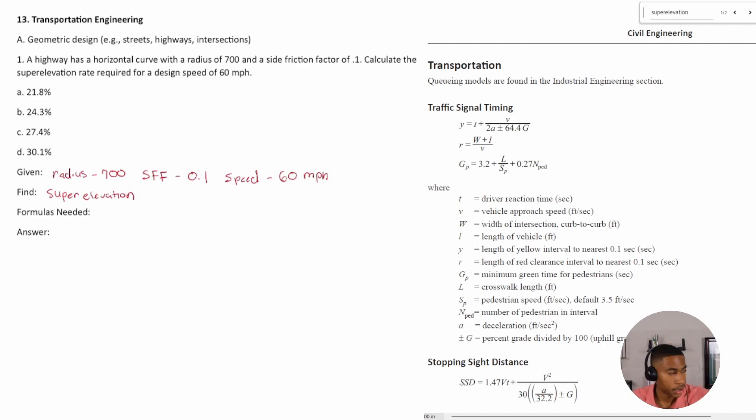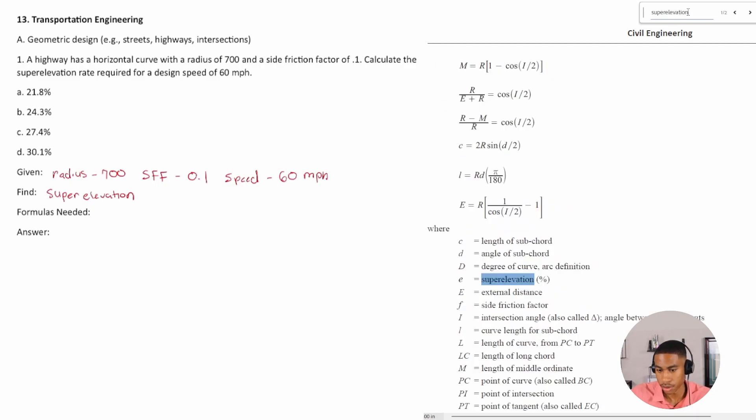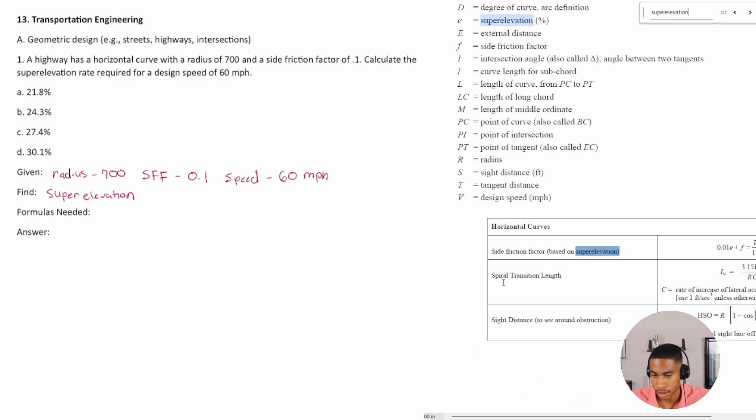Can we use a formula for this? Well, the first thing I would do is search super elevation in my FE handbook. So two things come up, and the first one shows what super elevation stands for. It looks like it's E, or is represented by the variable E, and it's a percentage.